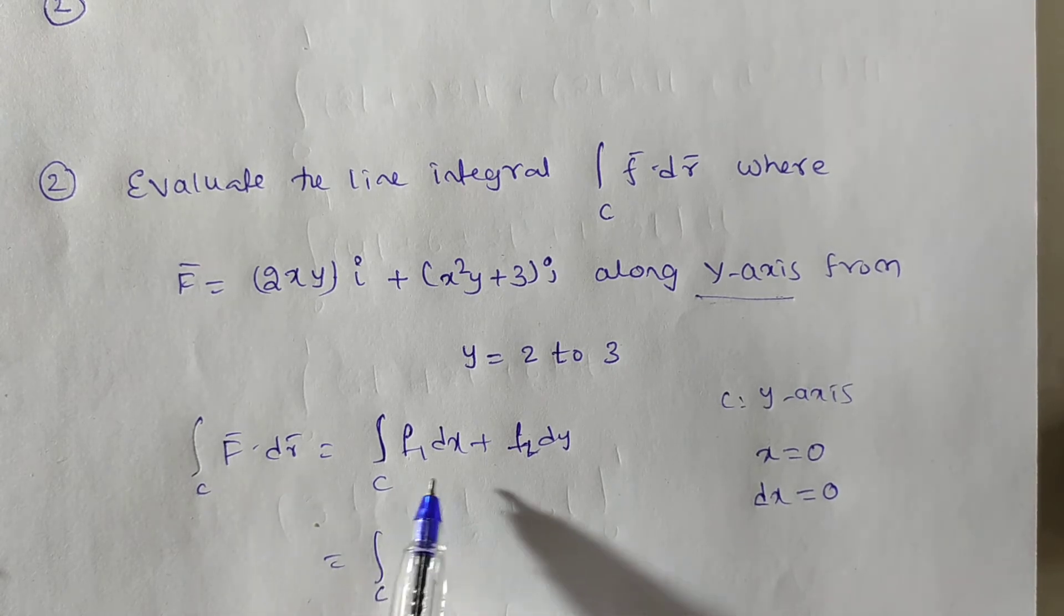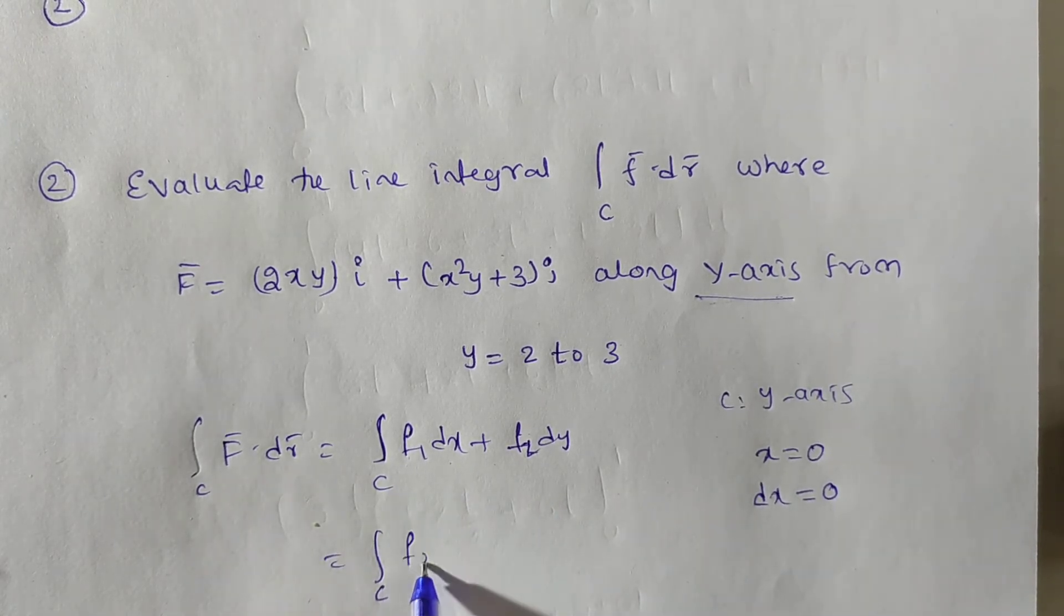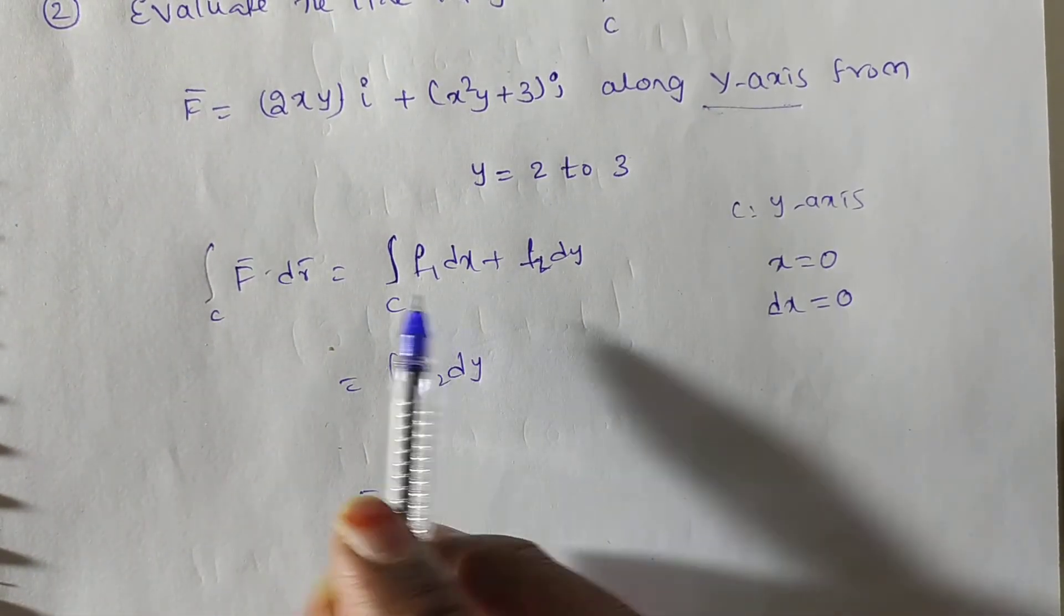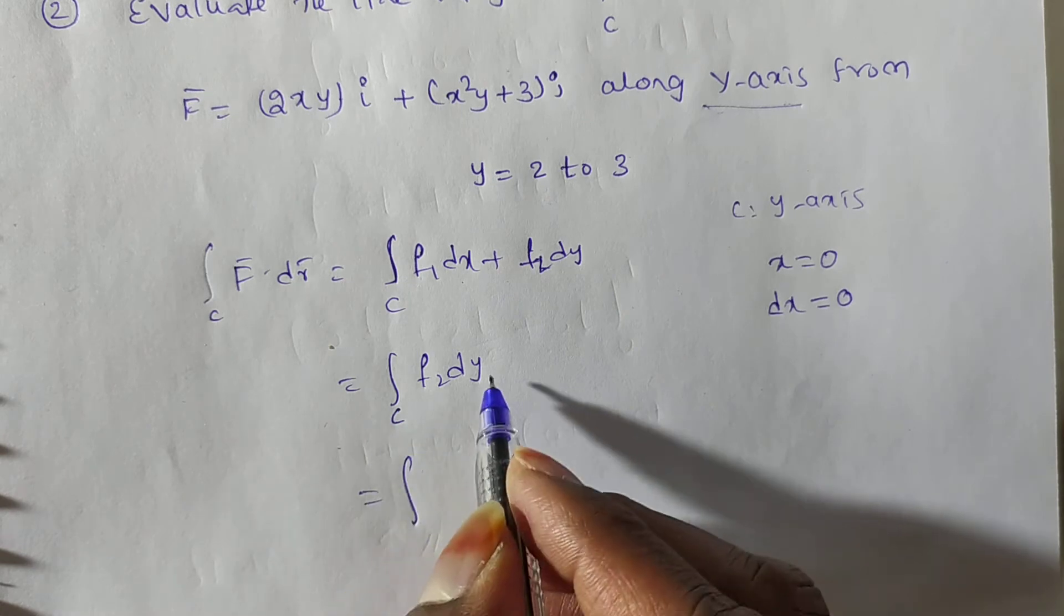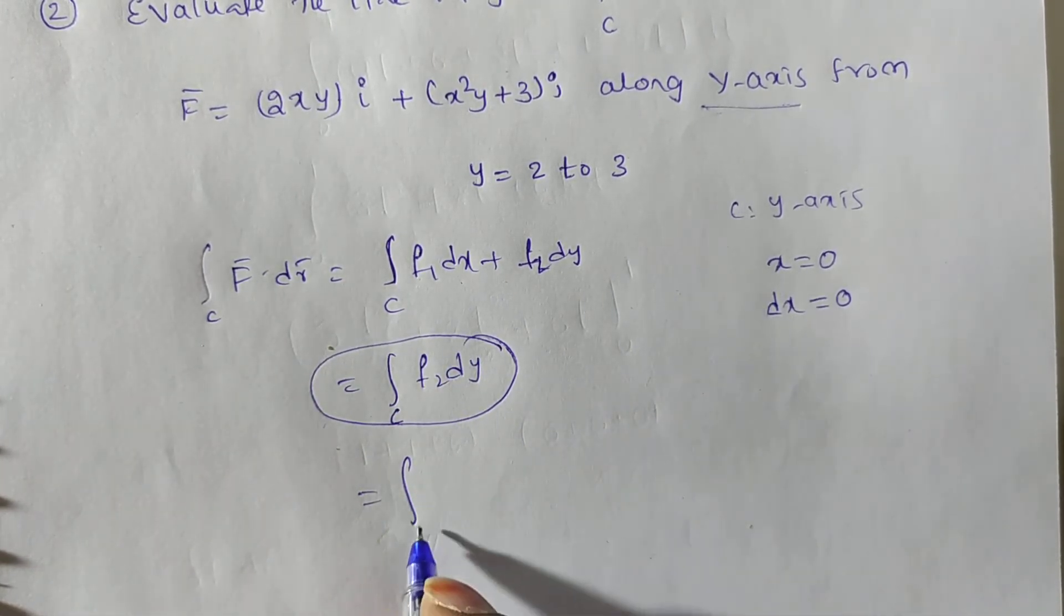So 0 into f1 is 0. Then you will have f2 dy. That f2 also you observe. What is f1? I will write again for you. I will write for you. After that only, I will put x=0 and dx=0.